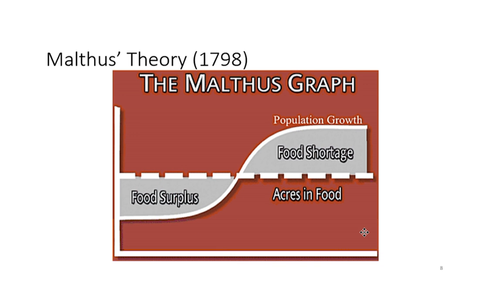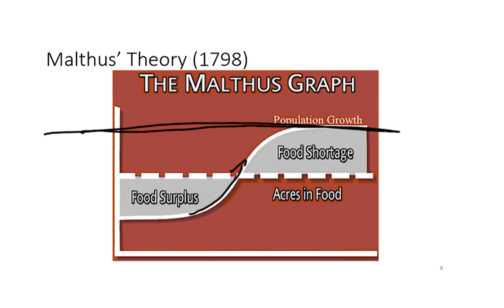Thomas Malthus was an economist in London who noticed there were more people than London could support. The human population was growing exponentially — doubling and continuing to grow, as you can see on this graph — until there was some sort of limiting factor. In this case the limiting factor is food: while food is available, population grows, but once food reaches its limit, population stagnates. Darwin used this idea in his theory of natural selection.